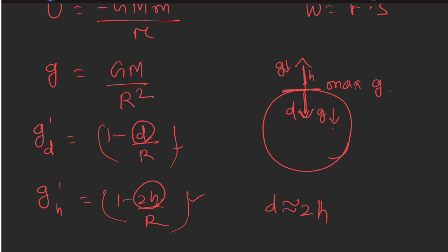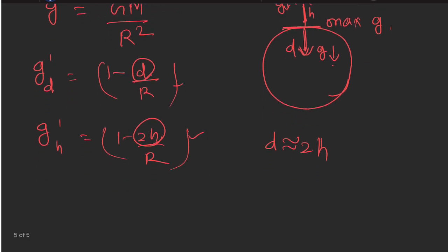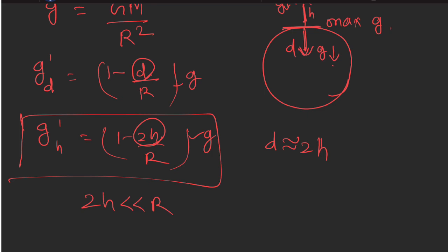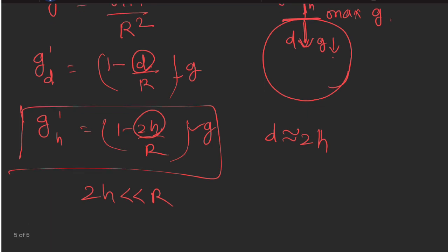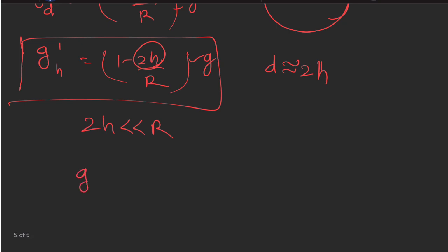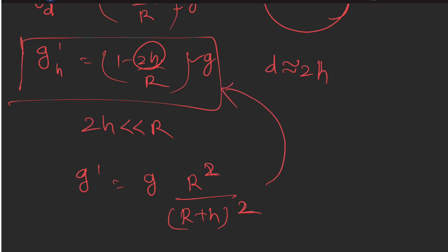We can see that the acceleration due to gravity at depth d is less than at height 2h. Comparing these formulas, g at depth is equivalent to g multiplied by (1 − d/R), and at height the value is even less than at depth 3h. These are the key formulas for variation of g.